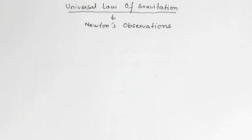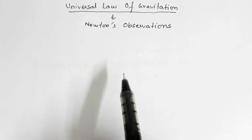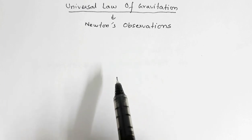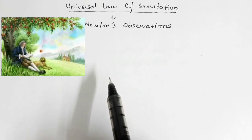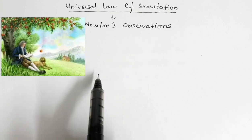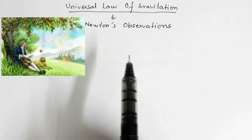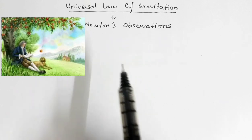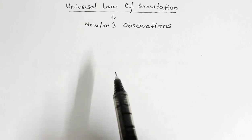Hello everyone, welcome to my channel. In this video we are going to learn about the universal law of gravitation from Newton's observation. From our childhood we have been hearing about the story of an apple falling on Newton's head, and from that observation he concluded the universal law of gravitation. So did the apple really fall on his head, or what was the actual phenomenon he observed? That is what we are going to explore in this video.